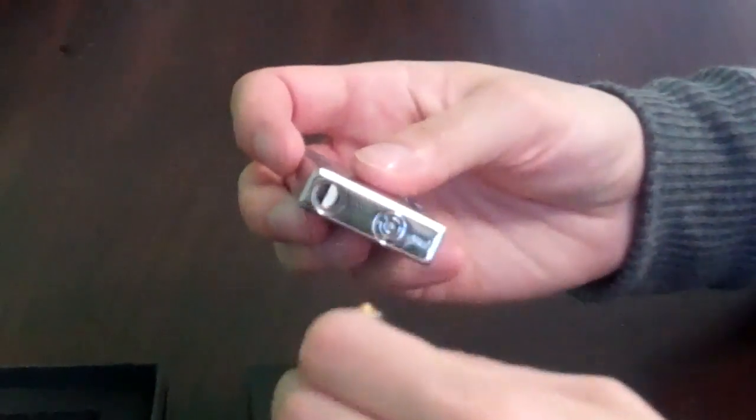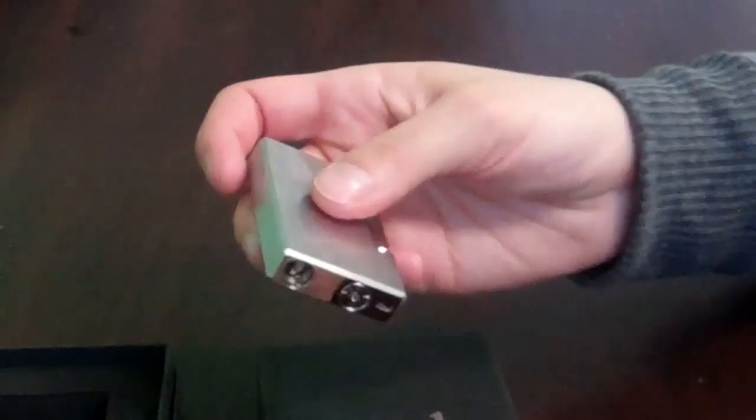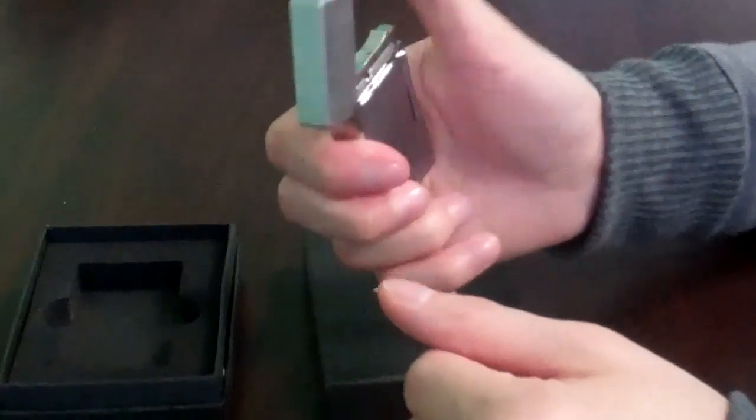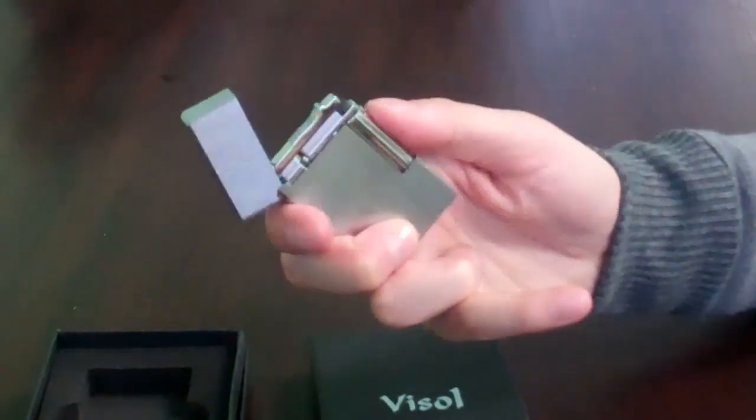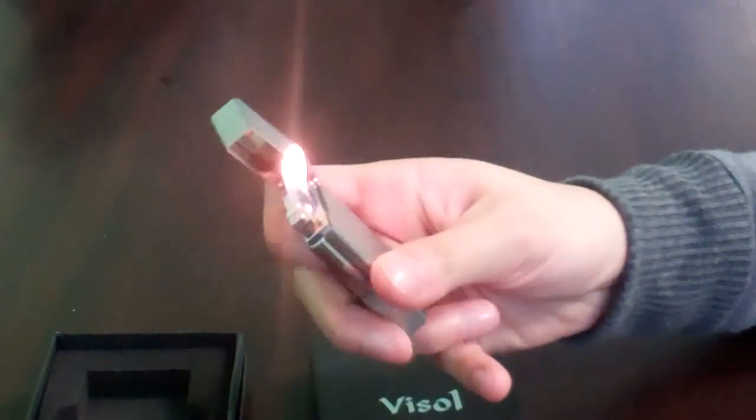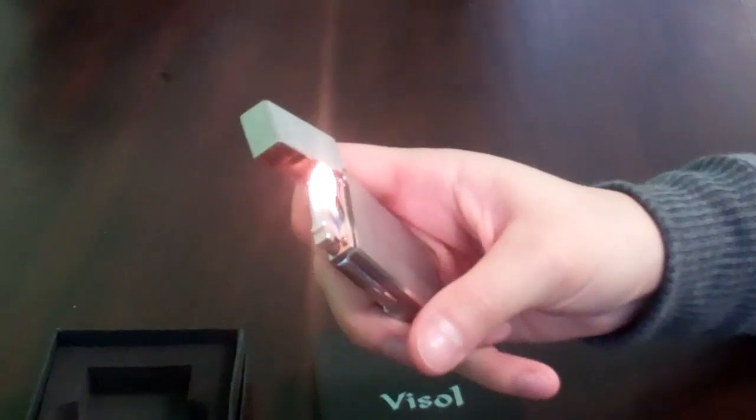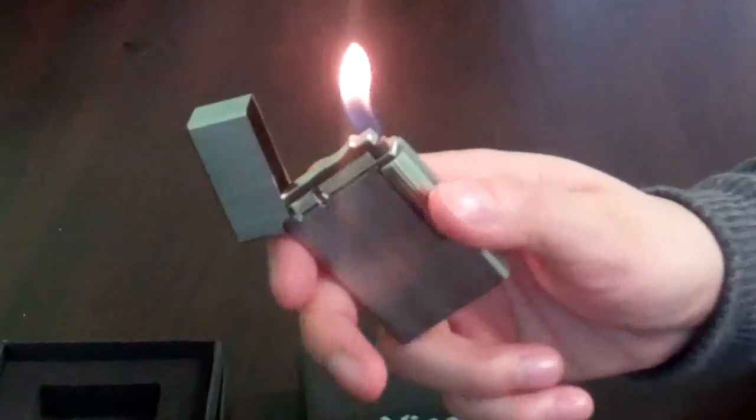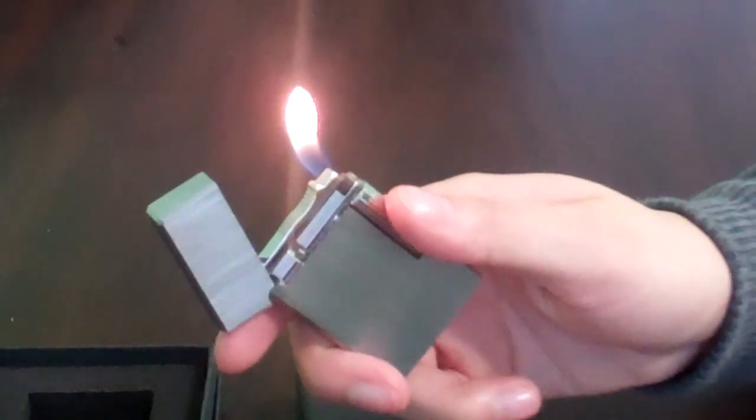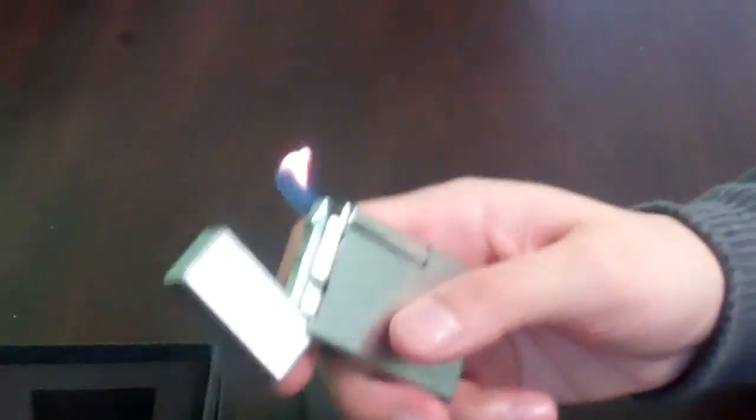You adjust the flame on this side. Dual action ignition. It has a traditional yellow candle flame. It's also wind resistant and it has a metal body.